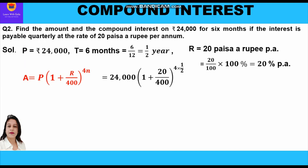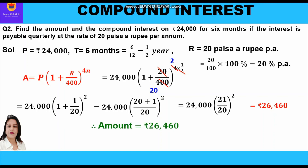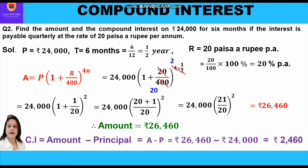After substituting the values, 400 and 20 cancel giving 20 in the denominator, and 4 and 2 cancel giving power 2. We get 24,000 × (1 + 1/20)^2. Taking LCM: 24,000 × (21/20)^2 = rupees 26,460. Compound interest = amount minus principal = 26,460 - 24,000 = rupees 2,460. So the amount is rupees 26,460 and compound interest is rupees 2,460.